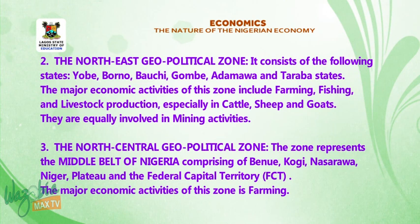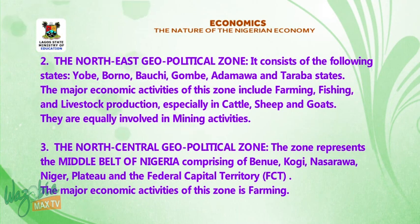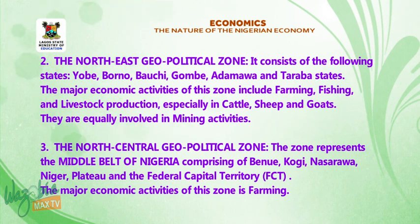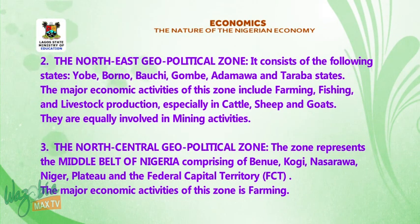Number three, the north-central geopolitical zone. The zone represents the middle belt of Nigeria, comprising Benue, Kogi, Nasarawa, Niger, Plateau, and the Federal Capital Territory, FCT. The major economic activity of this zone is farming.